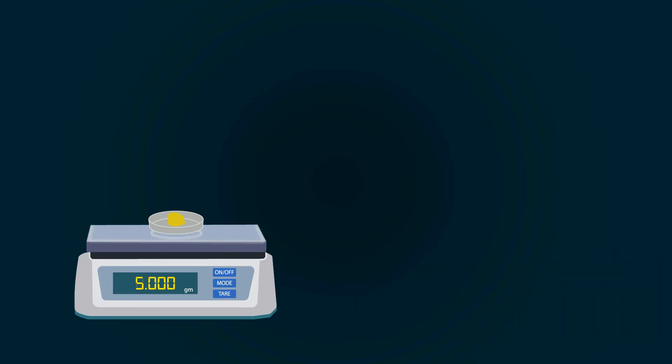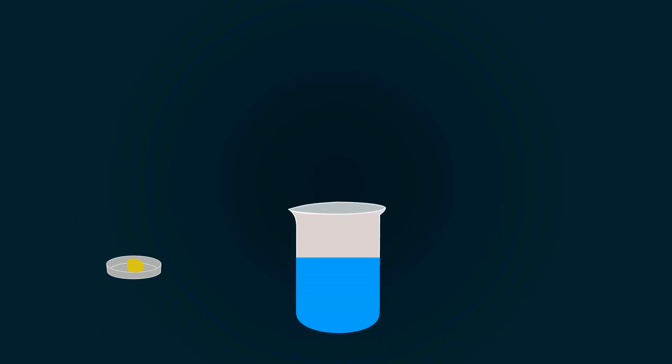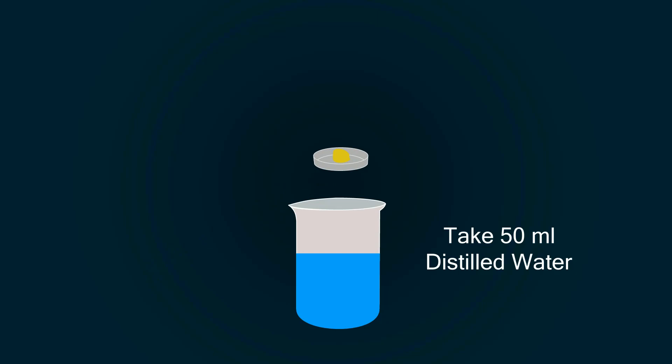Now take some distilled water in a beaker up to 50 milliliters and put the potassium chromate into it. Start mixing it with the help of a spatula to make a homogeneous mixture.